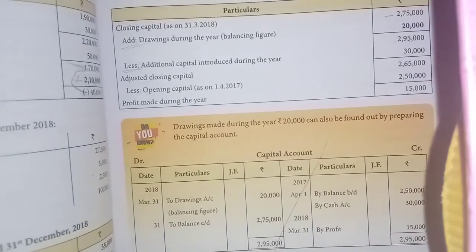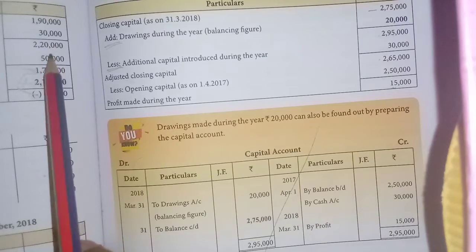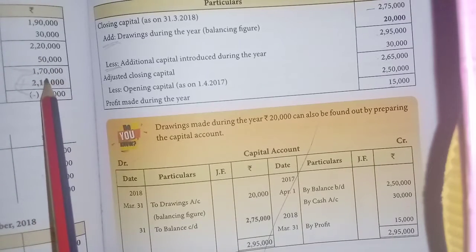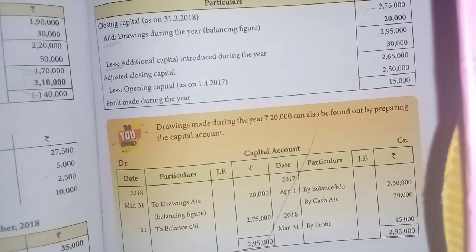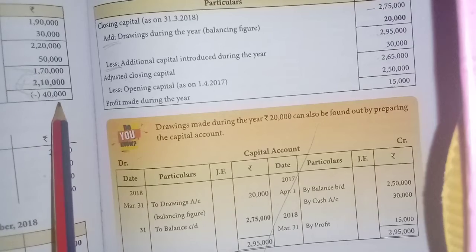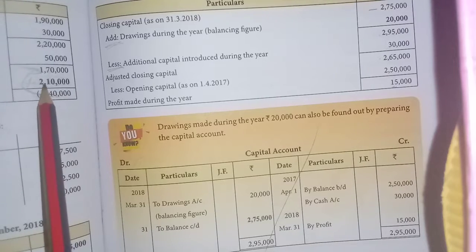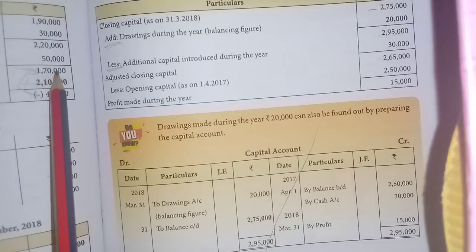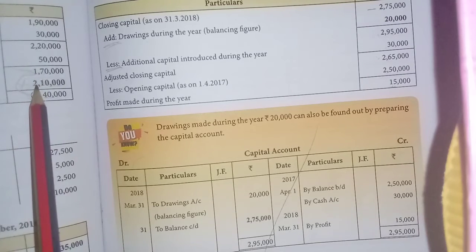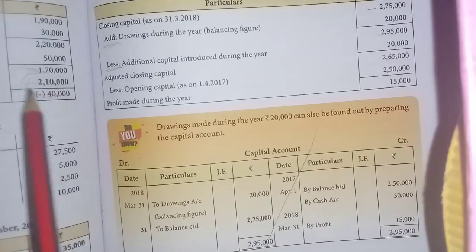For illustration three: closing capital is 1,90,000. Add drawings 1,20,000. Then less additional capital 50,000 — we get 1,70,000 as adjusted closing capital. Opening capital is unknown. Loss is 40,000. Since it is a loss, the opening capital must be more than the adjusted closing capital. So we add the adjusted closing capital and the loss: 1,70,000 plus 40,000 gives 2,10,000 as the opening capital.